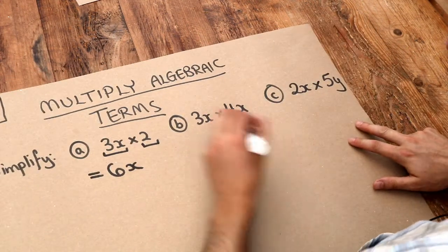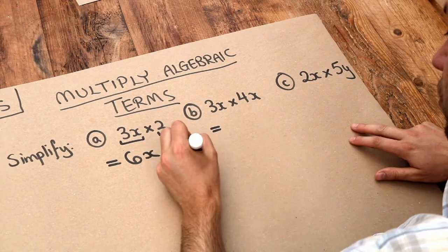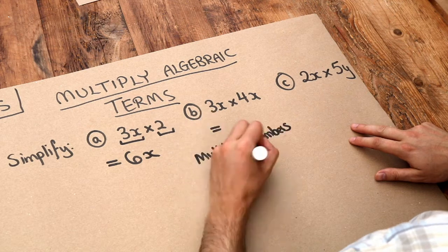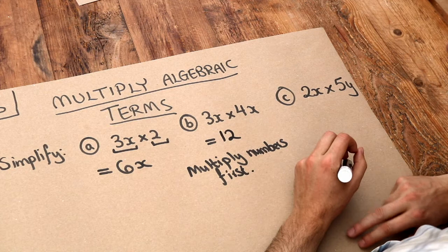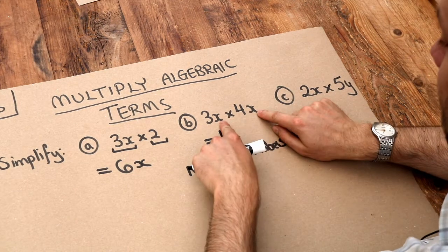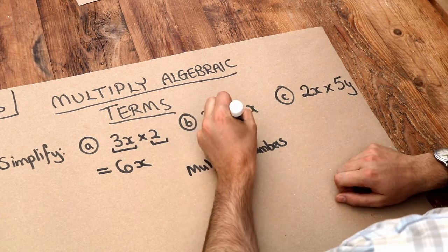So this next one is a bit more complicated. So again we start by multiplying the numbers first. So multiply numbers first. So the 3 times the 4 is 12. And now we've got this x times the x. Now when you have x times x, you actually get x squared.